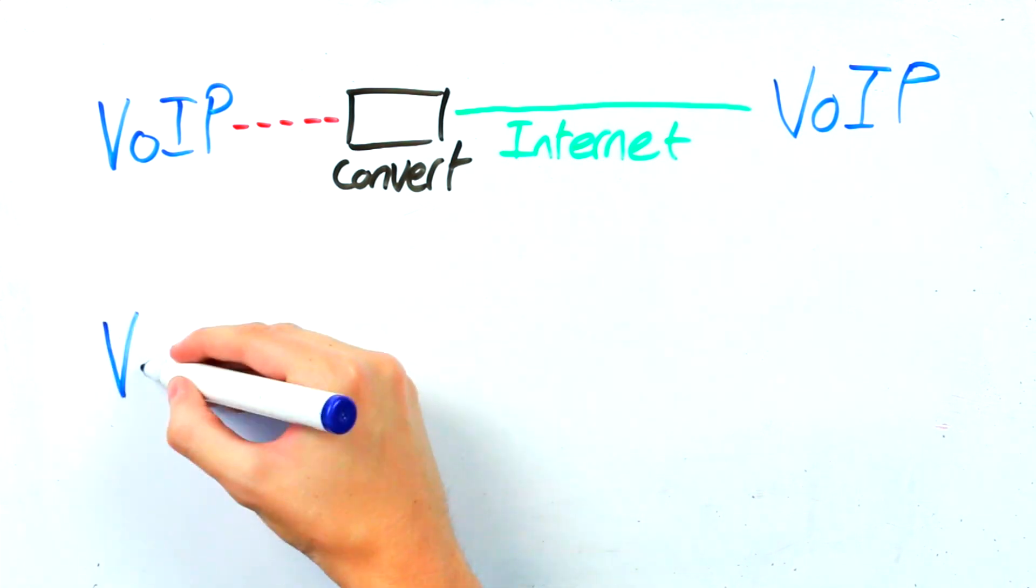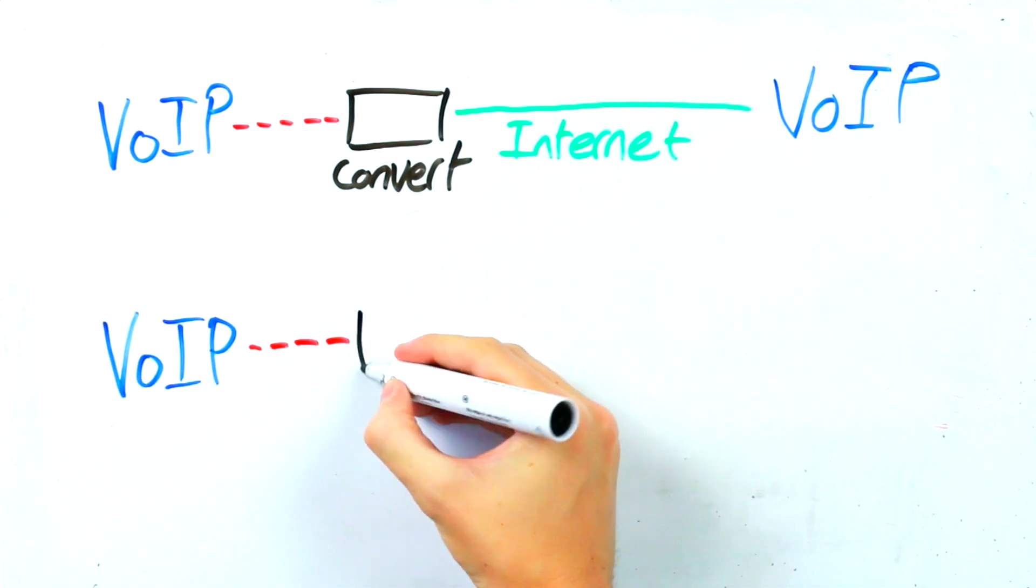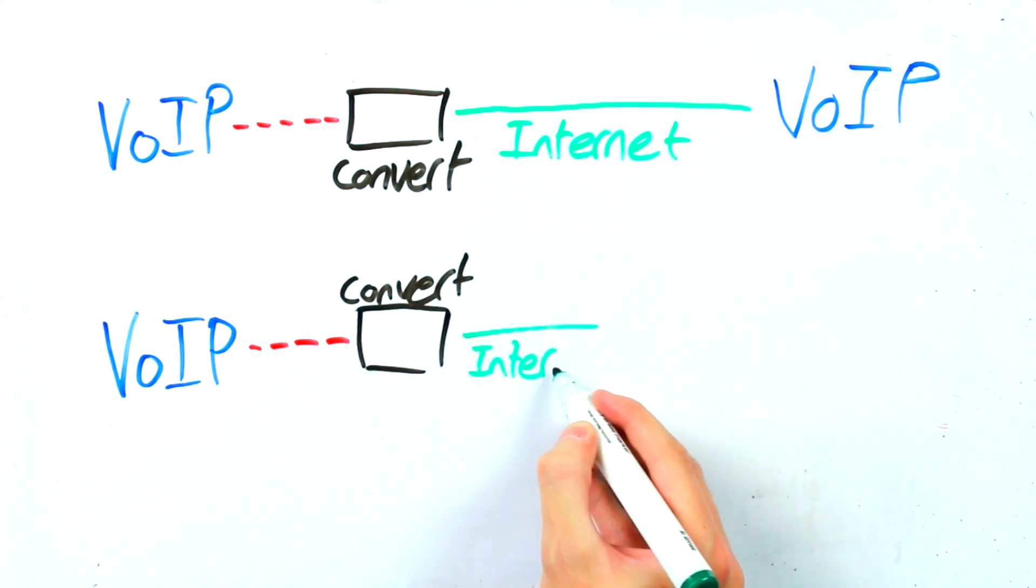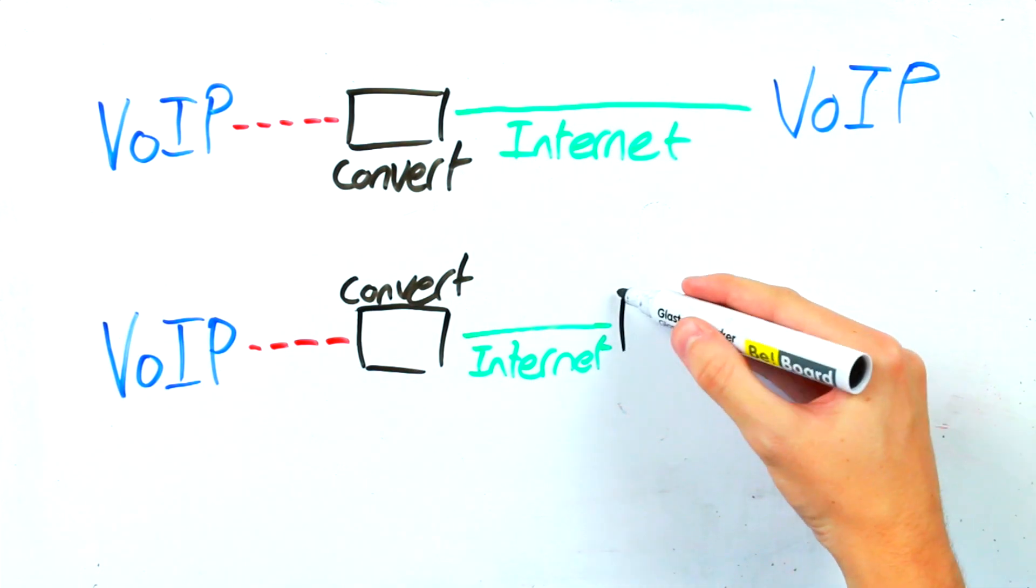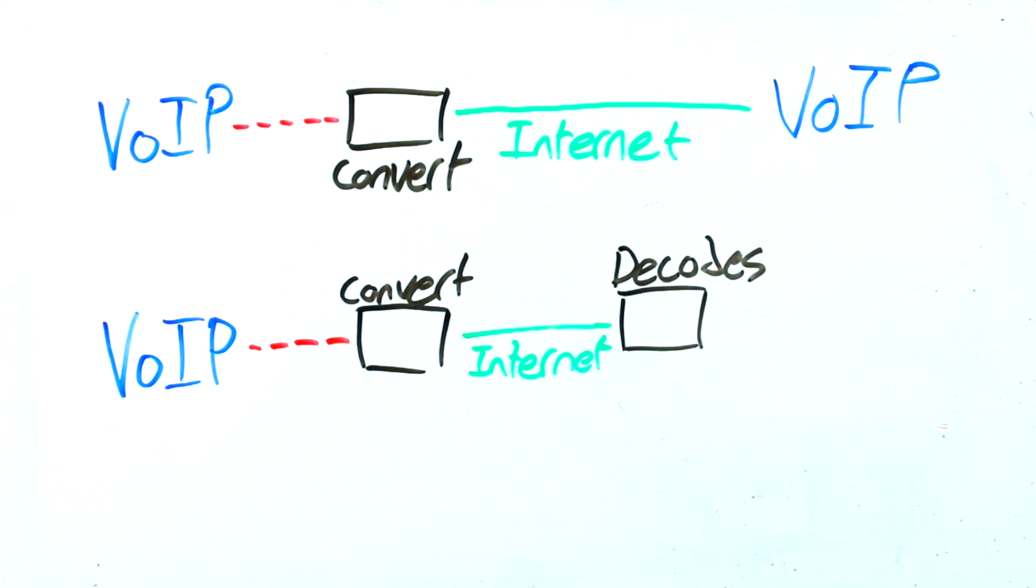What happens when you make any call from a VoIP phone is the analog data of your voice is converted into digital information that is then sent over the internet to another VoIP phone. And so all that happens when calling a landline is that the converted digital data is decoded back to an electrical signal that can then join the traditional copper wire landline network.